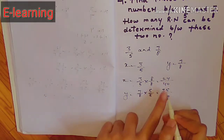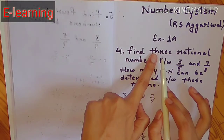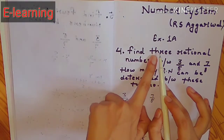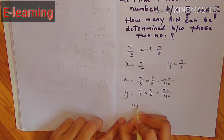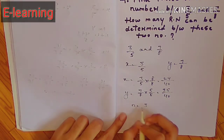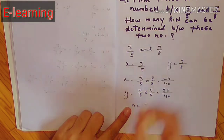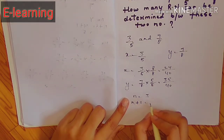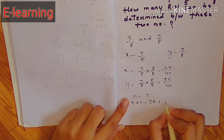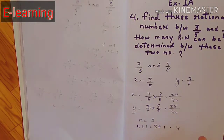अब देखिए n की value कितनी दी है — यहाँ पर 3 दी है, तो n=3 है। तो हम उसमें 1 add करते हैं: n+1 = 3+1 = 4 हो जाता है।